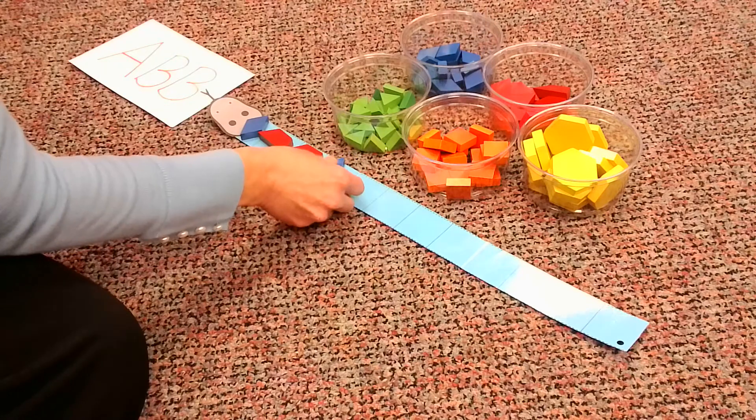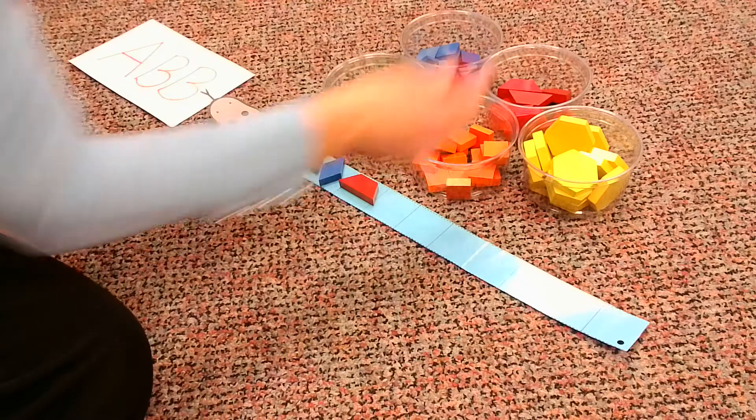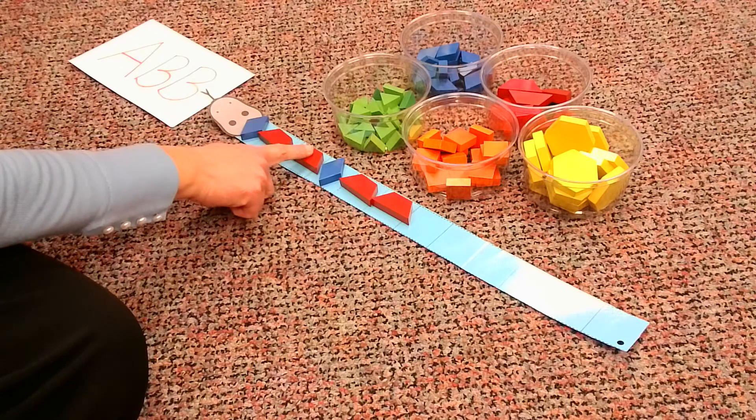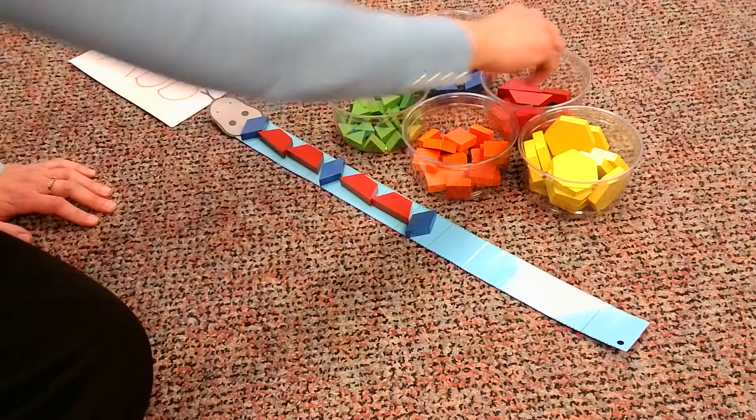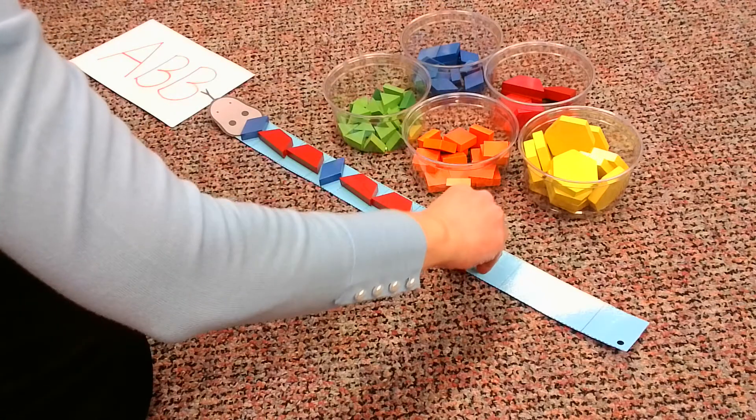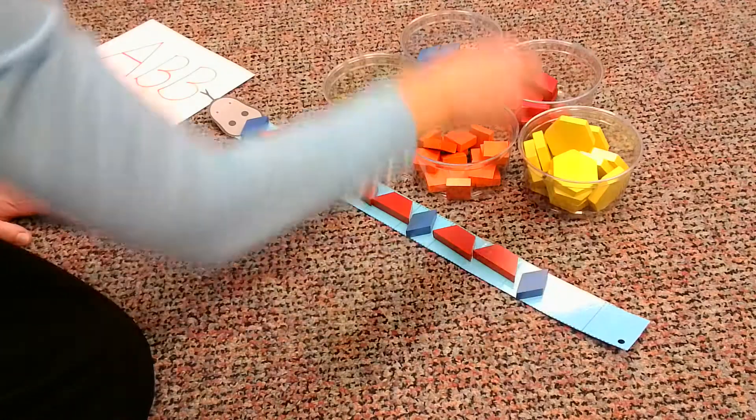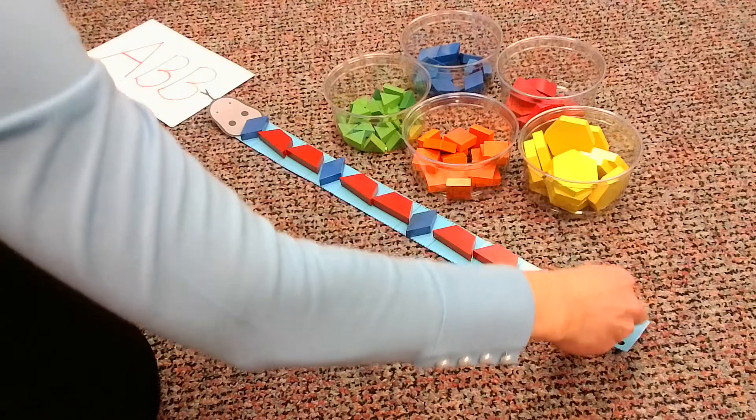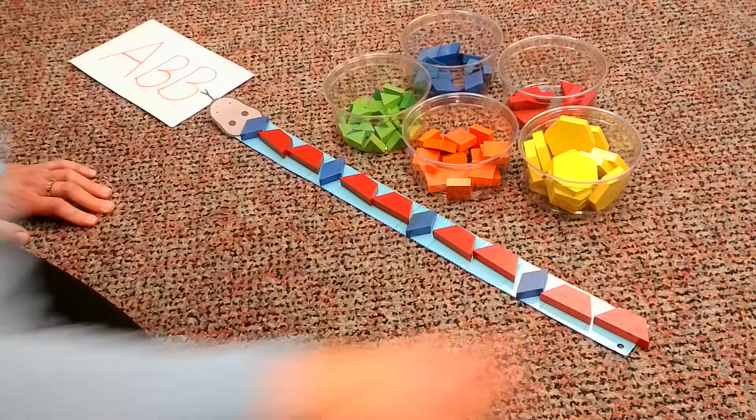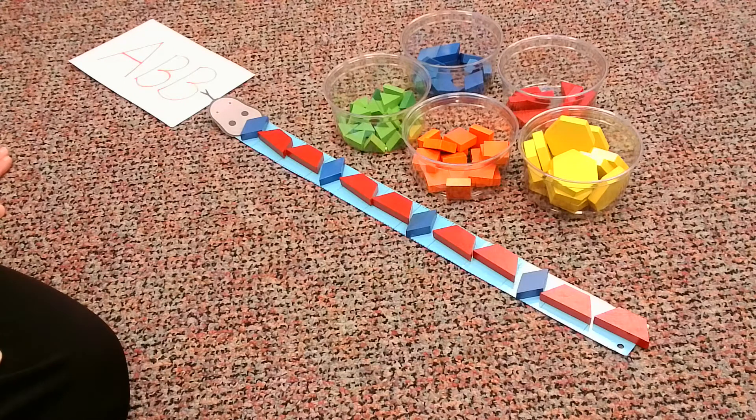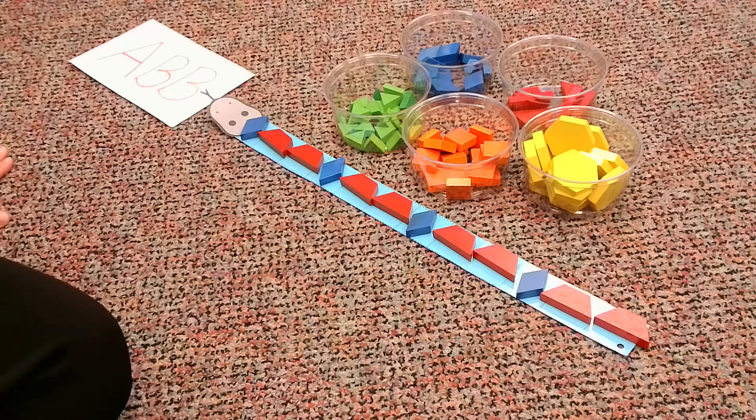So I have A, B, B, A, B, B. Rhombus, trapezoid, trapezoid. Check out that pattern snake. He's looking pretty cool there. I like his colors.